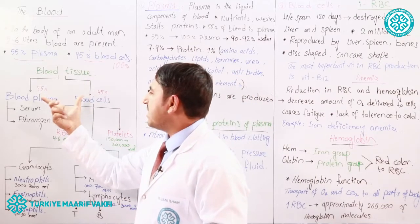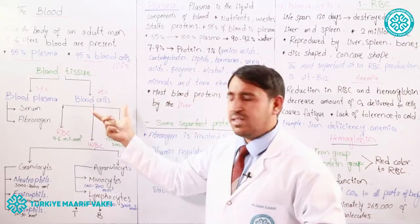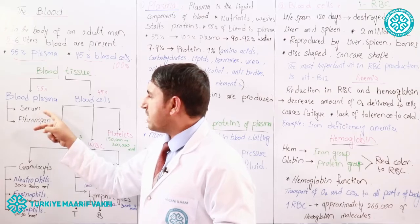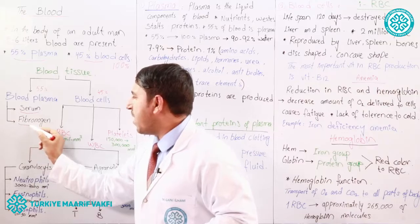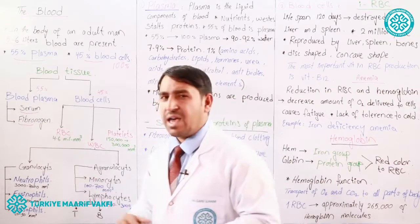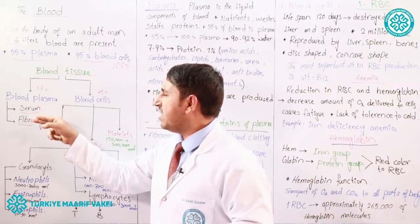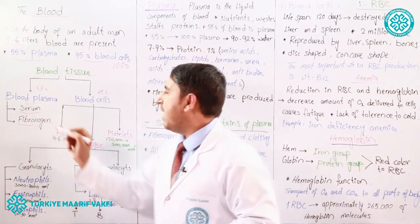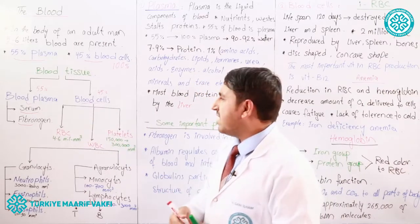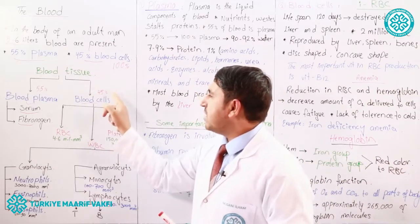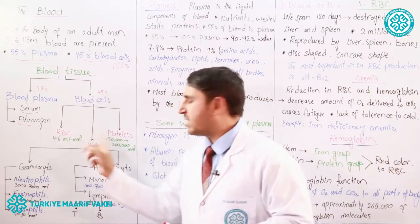If we look at this diagram, we have the blood tissue, which is a connective tissue. Two parts exist in the blood: the first part is blood plasma and the second part is blood cells. Blood plasma is made from two parts — the first part is serum (the liquid part), and the second part is fibrinogen, which is a type of protein. This protein and the liquid part combine to make blood plasma.